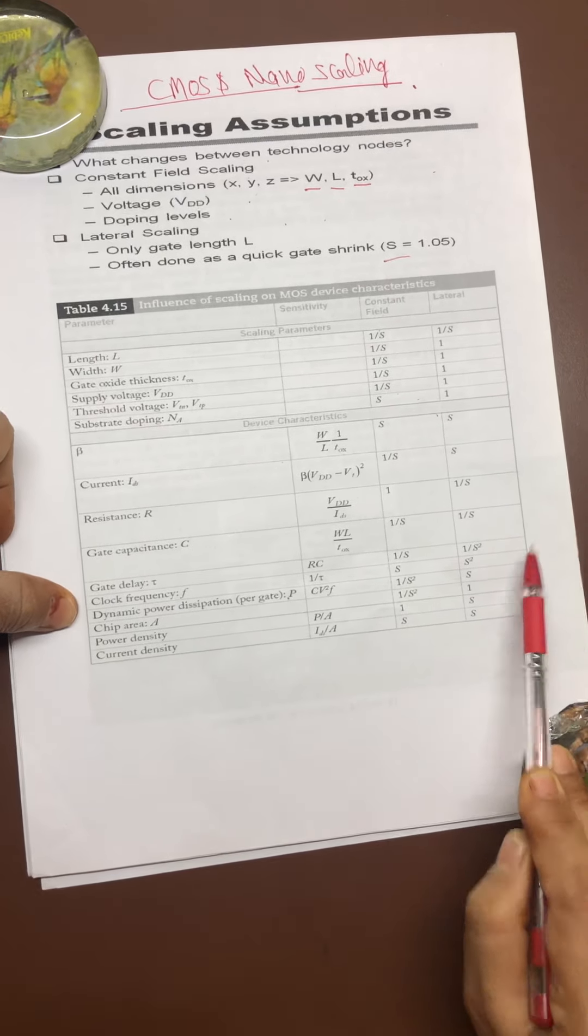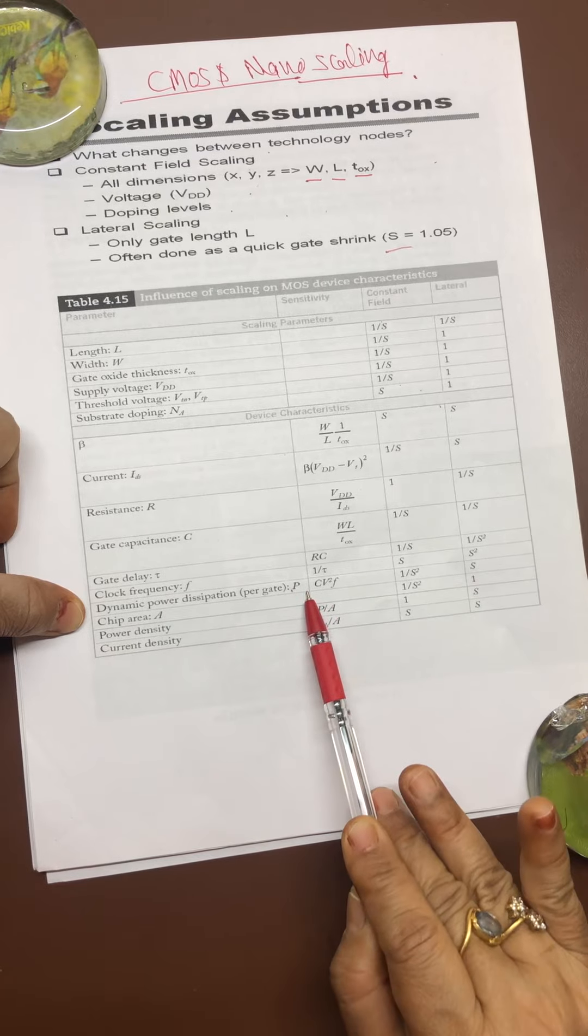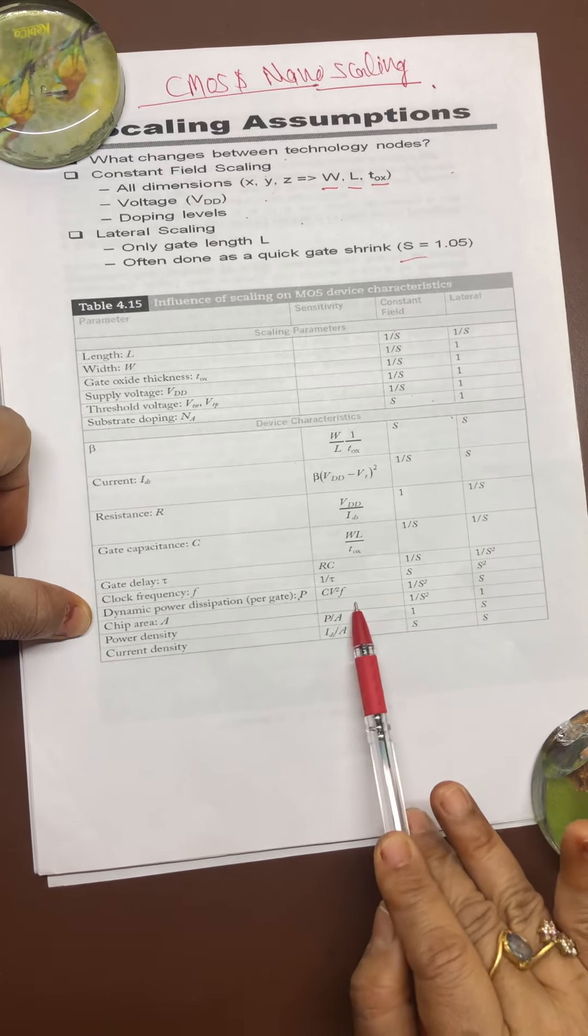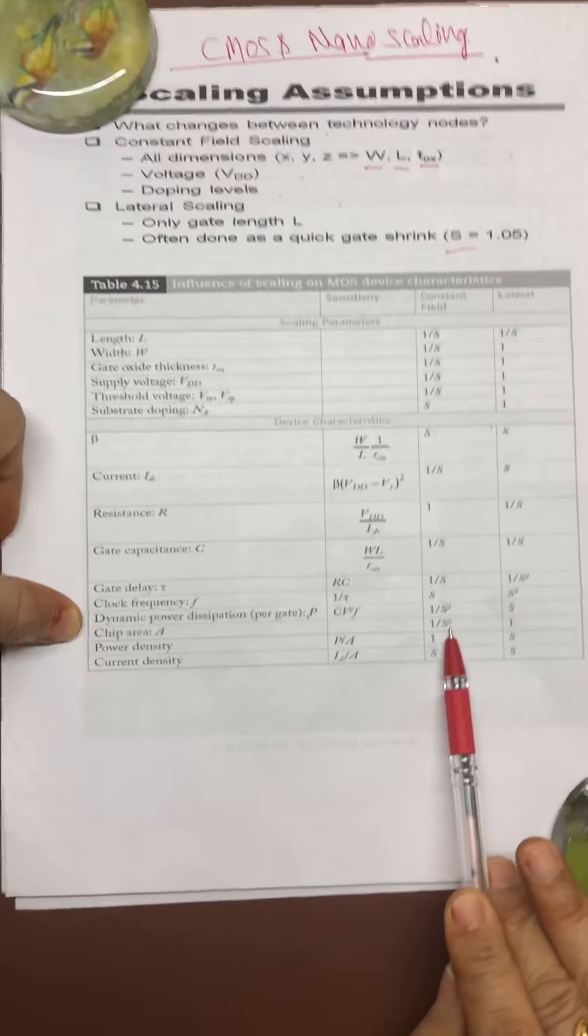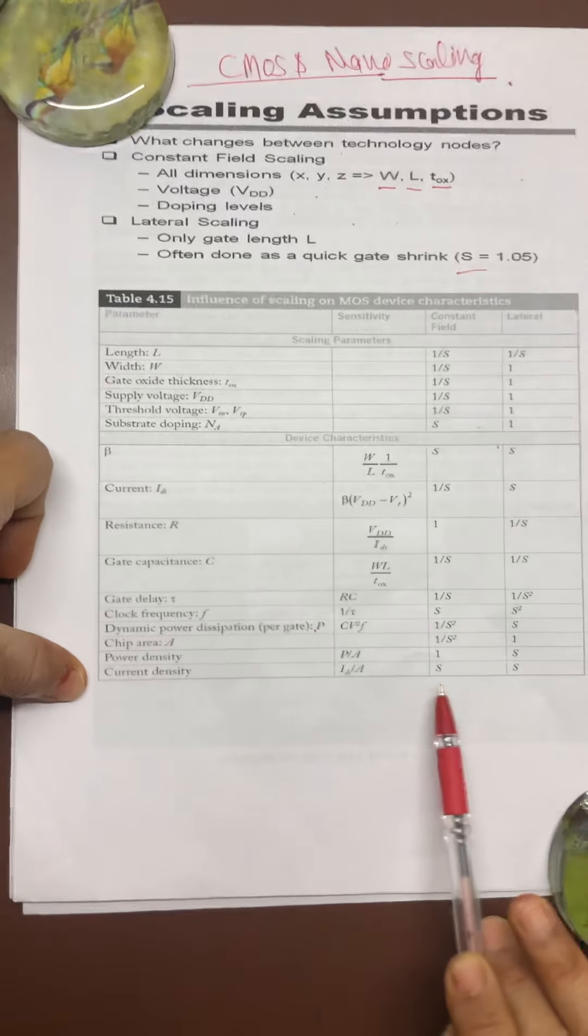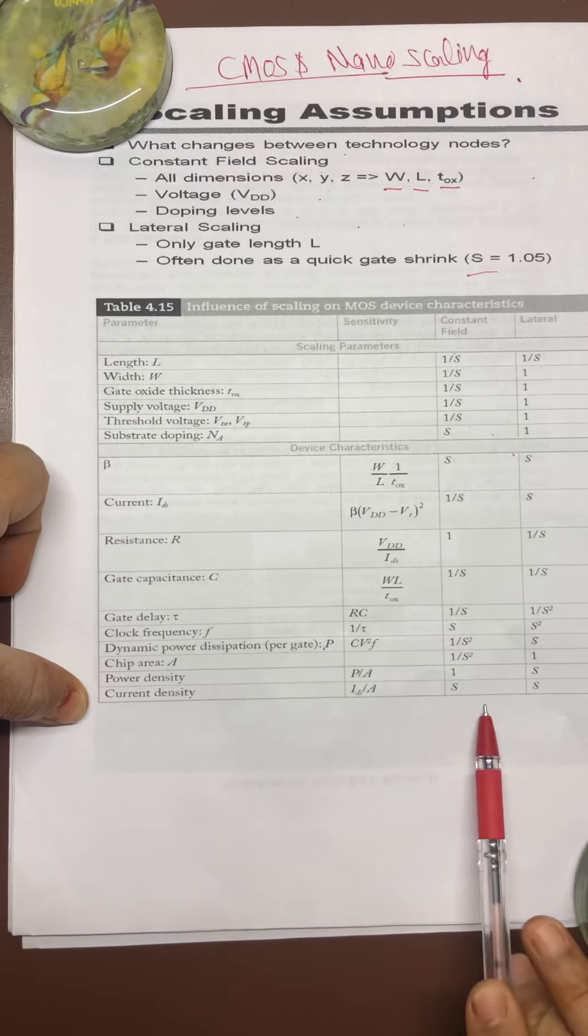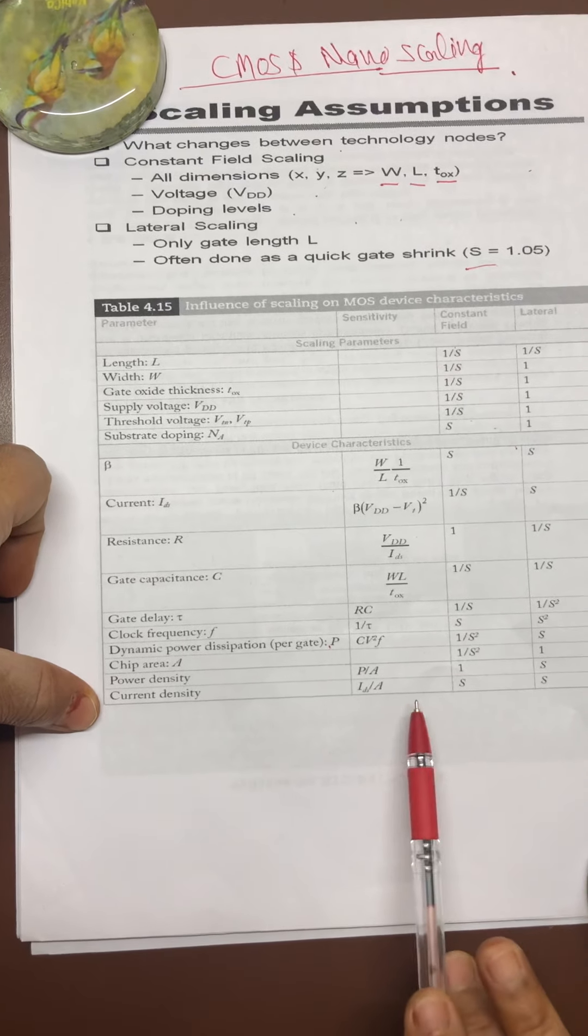Clock frequency, that is 1 upon tau, power dissipation CV squared upon F, and their scaling is also going to be changed with respect to 1 upon S squared. Chip area, power density is P upon A, and current density is I_DS upon A.